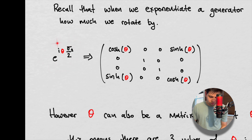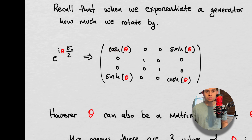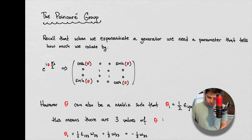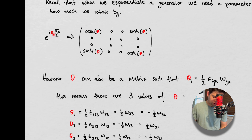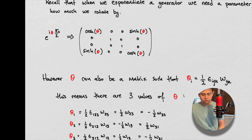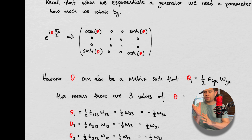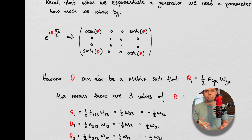When we do this, we find out that this parameter shows up in the argument of cosine and sine functions — these trigonometric functions. So in some sense, the parameter that you exponentiate is the argument inside the trigonometric functions that tells you how much of an angle to rotate, say within some plane or within some space.